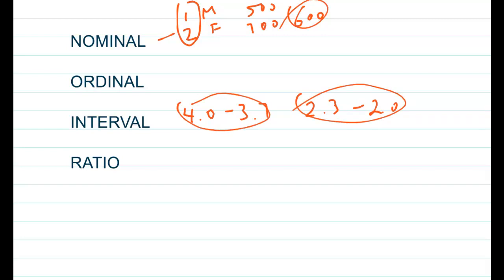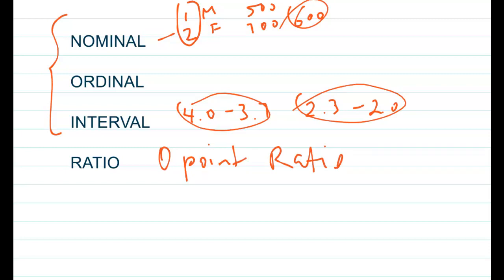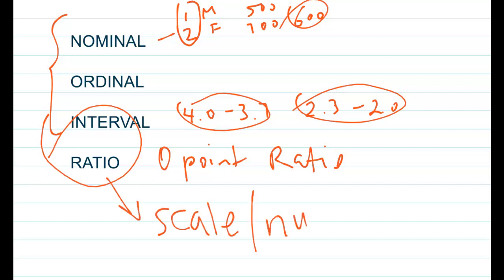A ratio variable has all the qualities of nominal, ordinal, and interval, plus a true or genuine zero point, which allows you to make ratios. You can say something is twice as big or as small as something else — for example, somebody is making twice as much money as somebody else in terms of income in dollars, or a meal has 2,000 calories compared to another with 1,000 calories. Age is a ratio variable as well. Interval and ratio are called scale or numerical and are the highest levels of measurement in terms of sophistication.